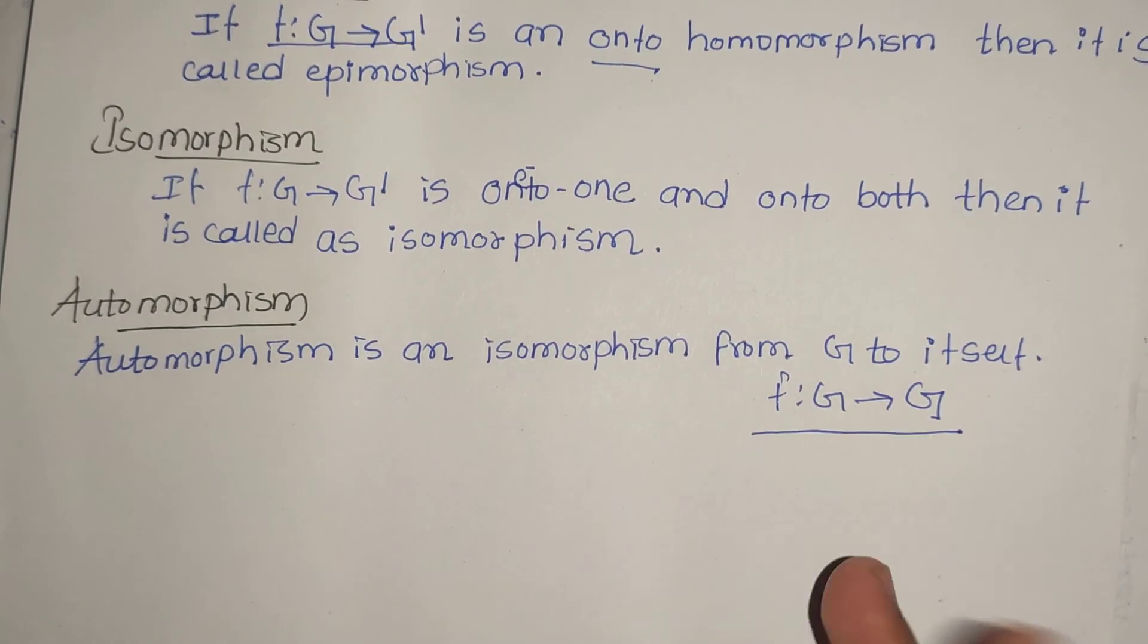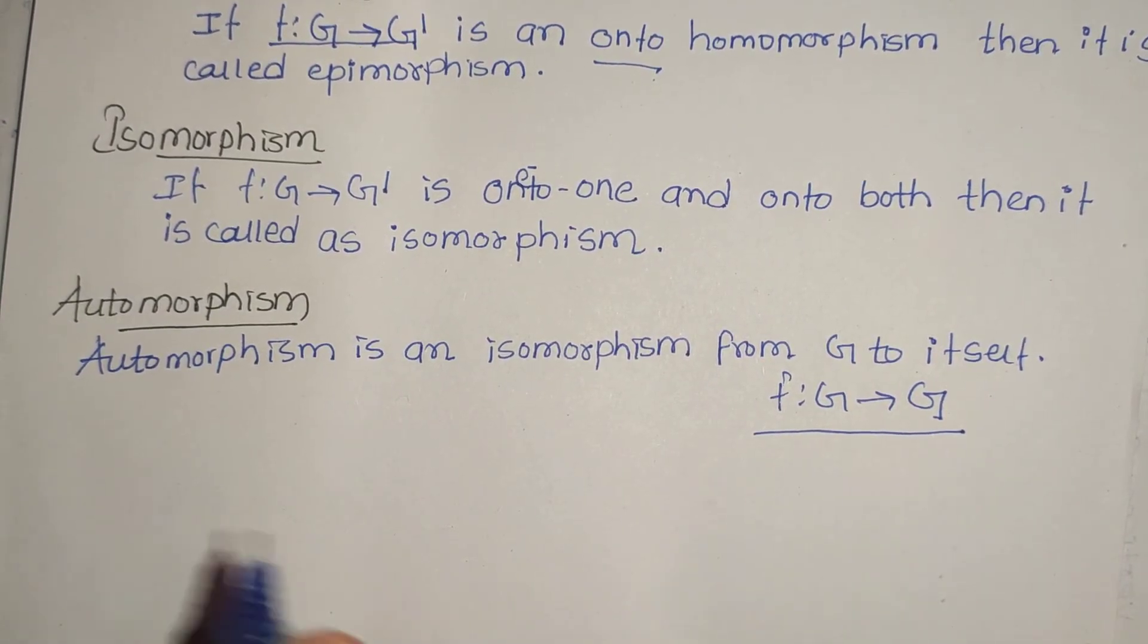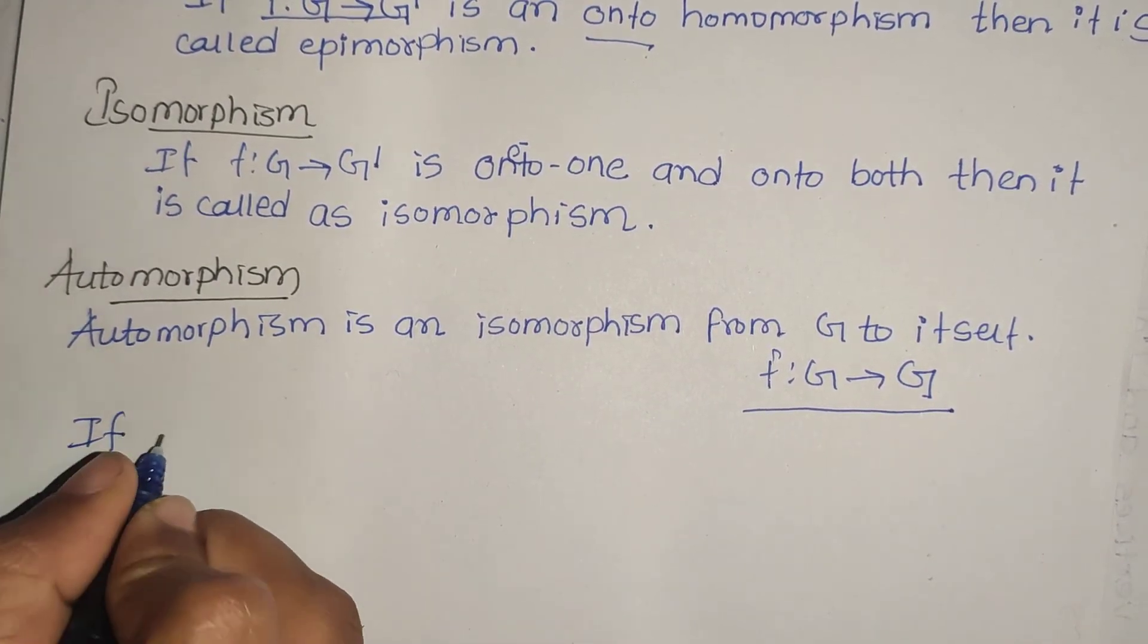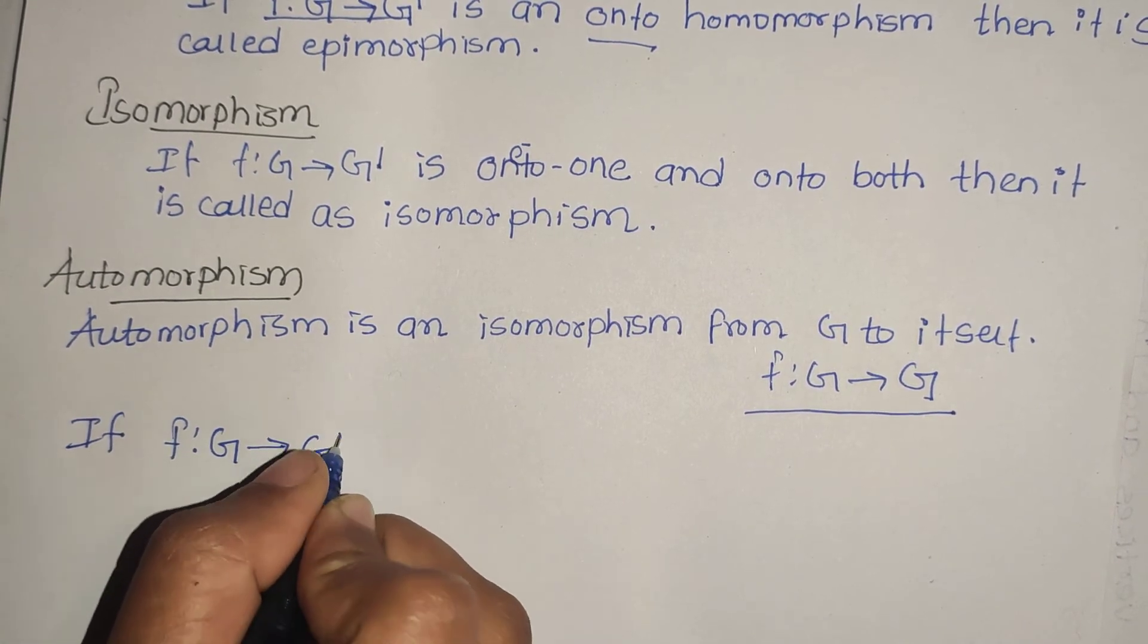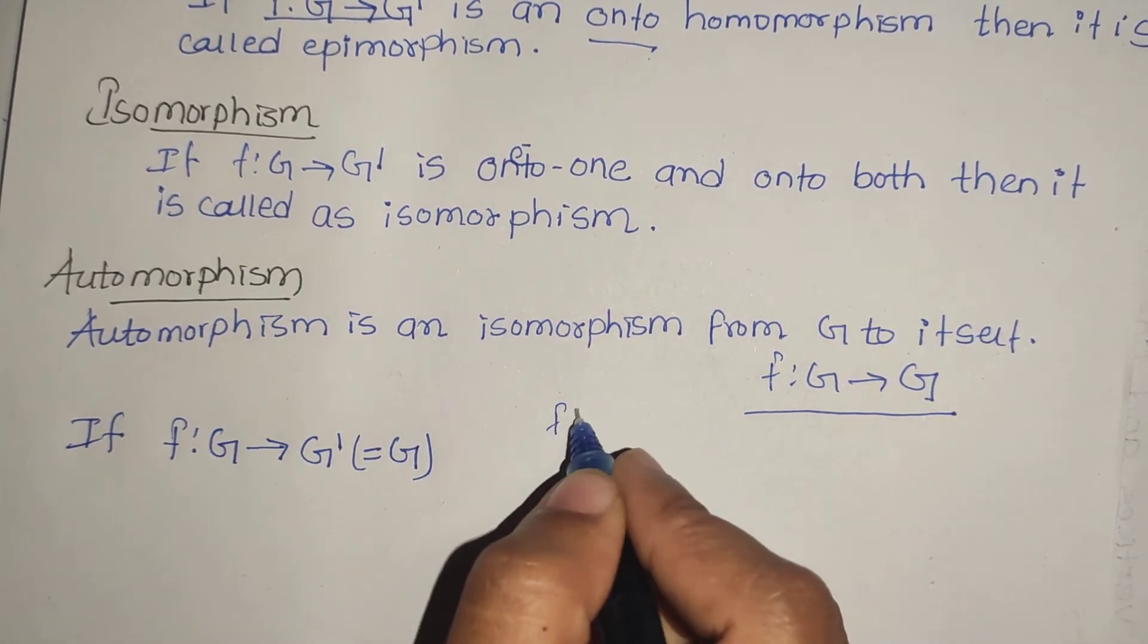That means f: G → G. If it is one-to-one and onto both, then it's called automorphism.